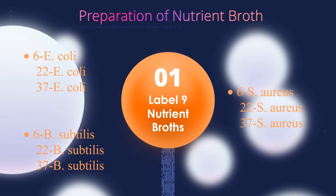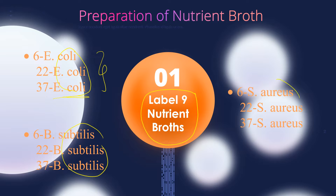Our first step is to label 9 nutrient broths, which will be given for every group. Three of these nutrient broths will be used for the inoculation of E. coli, another three for B. subtilis, and the last three for Staphylococcus aureus. Since this is an exercise regarding the effects of temperature, we will also include in the label the temperature at which we will incubate the test tubes: 6 degrees Celsius, 22 degrees Celsius, and 37 degrees Celsius.